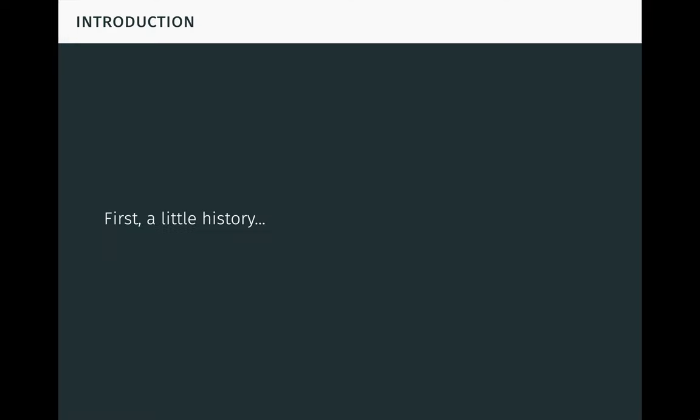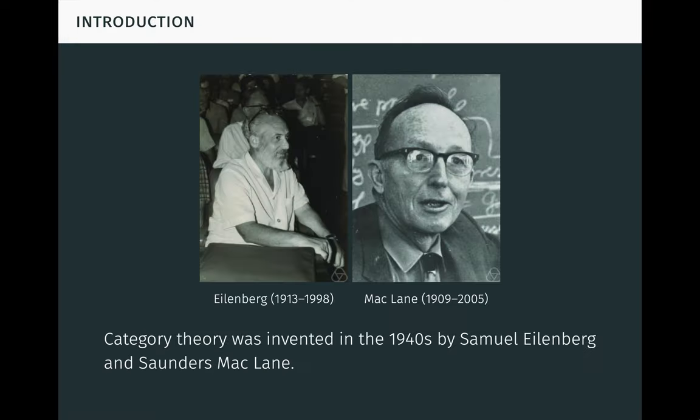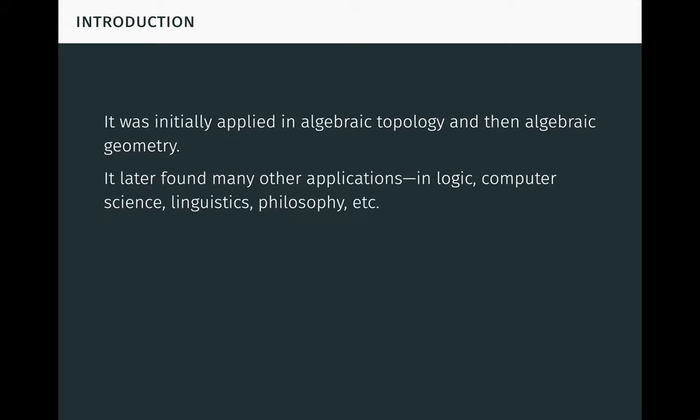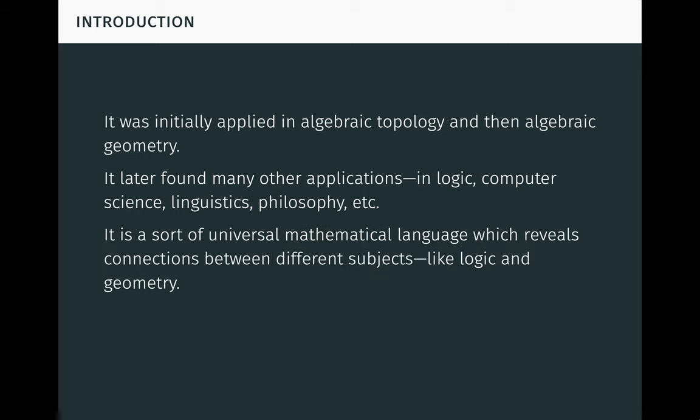First, I want to provide just a little bit of historical context. Category theory was originally invented in the 1940s by two mathematicians, Samuel Eilenberg and Saunders McLane. It was initially applied in algebraic topology and then in algebraic geometry. However, it later found many other applications, for example in logic, computer science, linguistics, philosophy, and other areas. Part of the reason category theory has been so successful is that it's a sort of universal mathematical language which tends to reveal interesting connections between seemingly unrelated subjects, like logic and geometry.